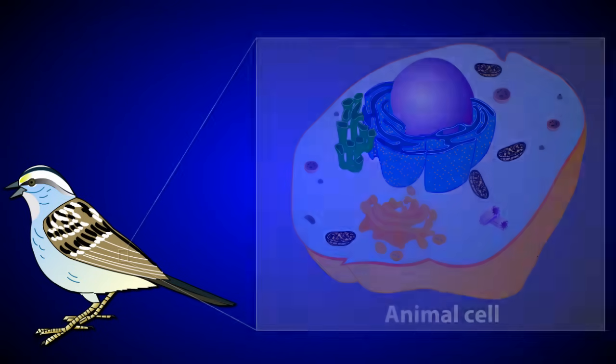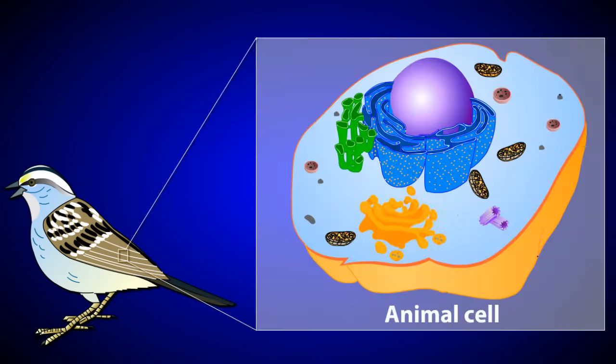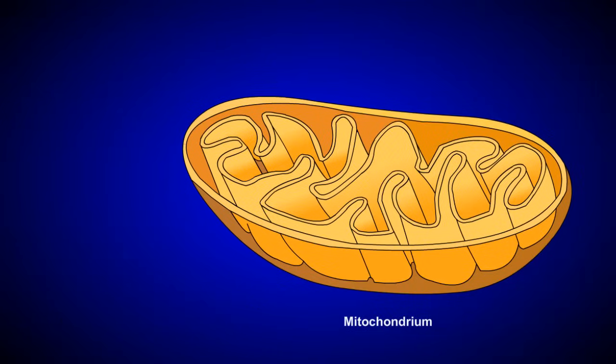If we zoom in on one of this bird's cells, we can see the mitochondria, where the majority of the reactions involved in cellular respiration occur. Let's zoom in further on a single mitochondrium.